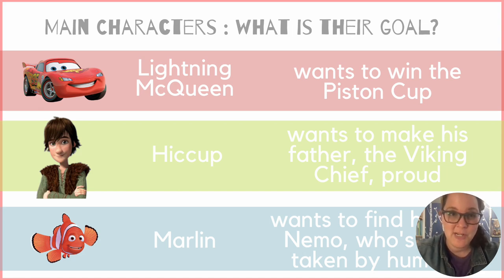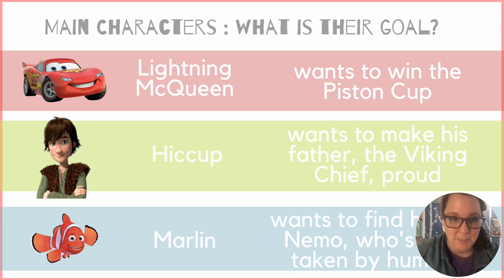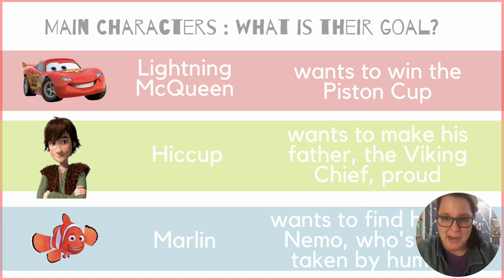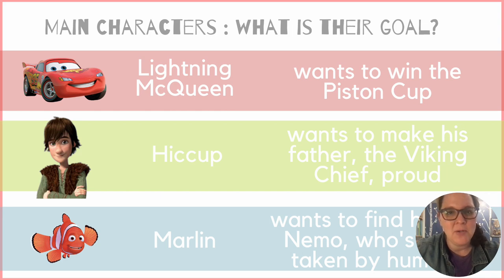Let's take a look at our story examples and main characters. In the Cars movie, our main character is Lightning McQueen, and Lightning's goal is he wants to win the Piston Cup — that's his goal throughout the whole movie. In How to Train Your Dragon, our main character is Hiccup, and his goal is he wants to make his father, the Viking chief, proud. Our third movie, Finding Nemo — there are actually two main characters, Marlin and Nemo, but we're going to look at Marlin. Marlin's goal is he wants to find his son Nemo, who is taken by a human.